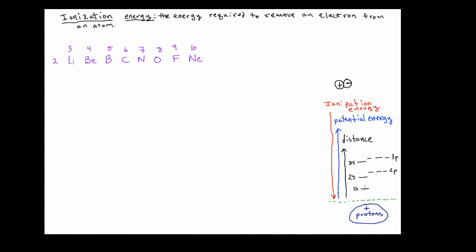This should make perfect sense: electrons in energy level one are much closer to the protons, so there is a much greater force of attraction between those electrons and the protons than for electrons in energy level three. The relationship between potential energy and ionization energy is equal in magnitude but opposite in sign. Electrons in energy level one are much harder to remove and require a lot more energy because they have significantly lower potential energy. Electrons in energy level three are at higher potential energy and therefore easier to remove — less ionization energy is needed.